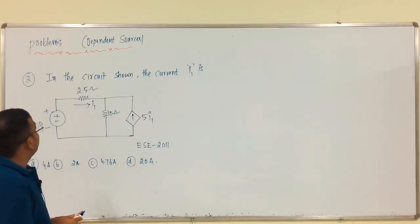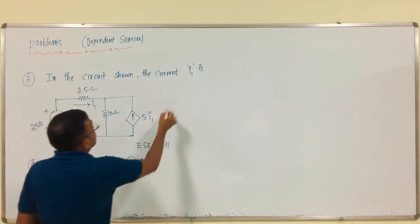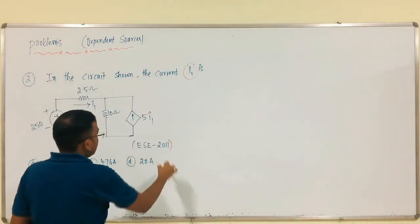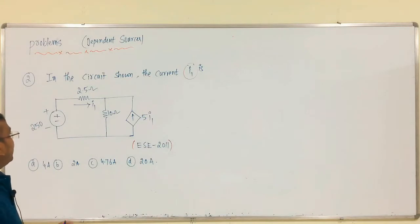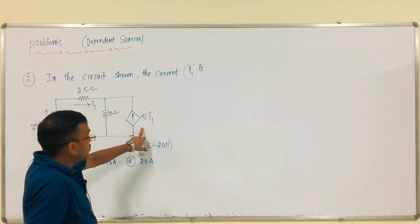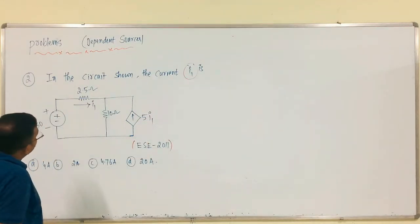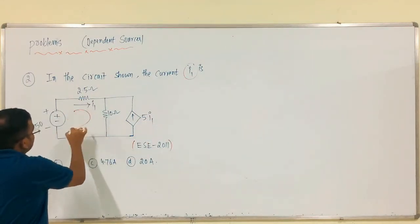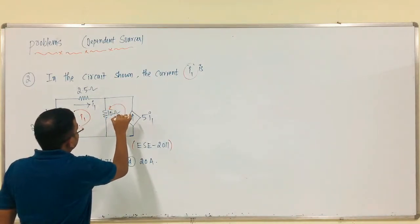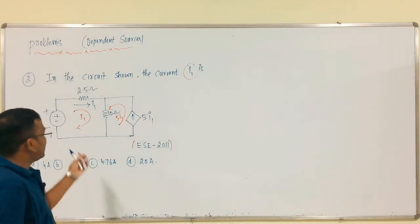Next problem: in the circuit shown, we have to calculate the current I1. This is the problem asked in ESC 2011. We have a current dependent current source and have to calculate the current I1. The examiner provides the current direction: this is I1 clockwise, and this is phi·I1.